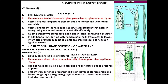Xylem parenchyma stores food and also performs lateral conduction. Vessels are small conducting tubes that are joined together. Tracheids are elongated with tapered ends. Xylem parenchyma is a living tissue; the rest are dead. Xylem fiber provides mechanical support. Xylem is lignified — we call them lignified vessels. Xylem is unidirectional: water and minerals travel from roots to stem, meaning only upward.